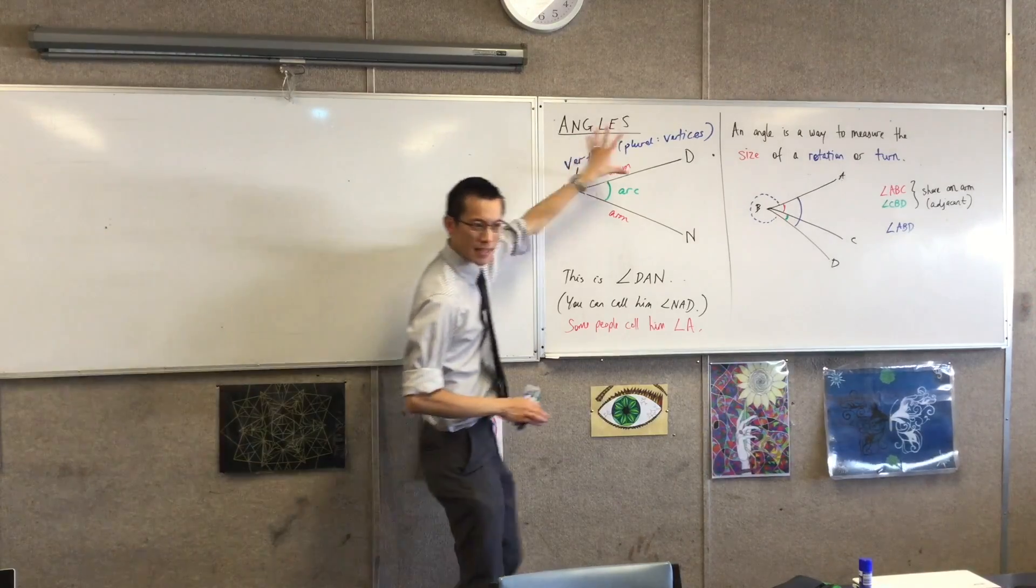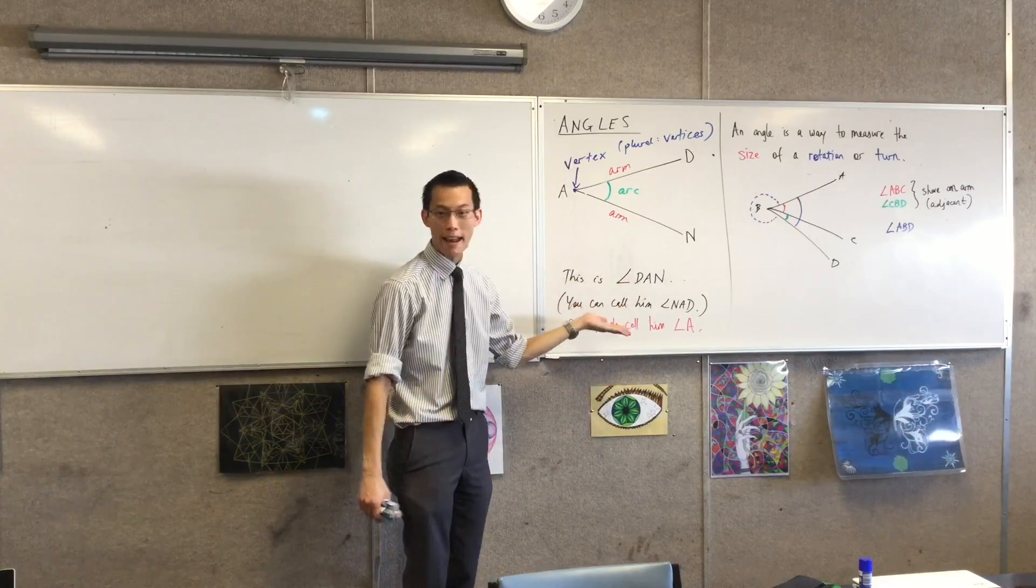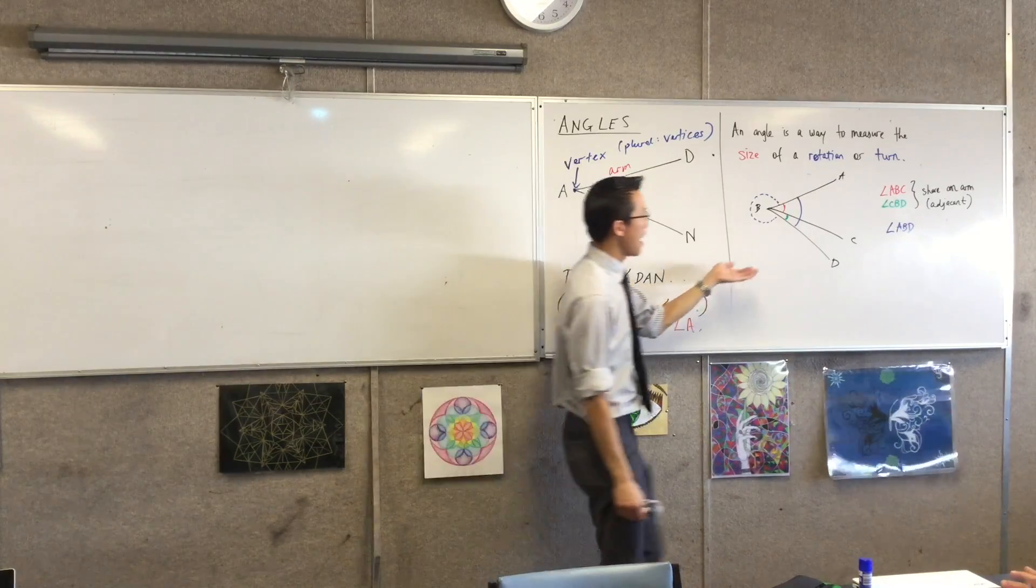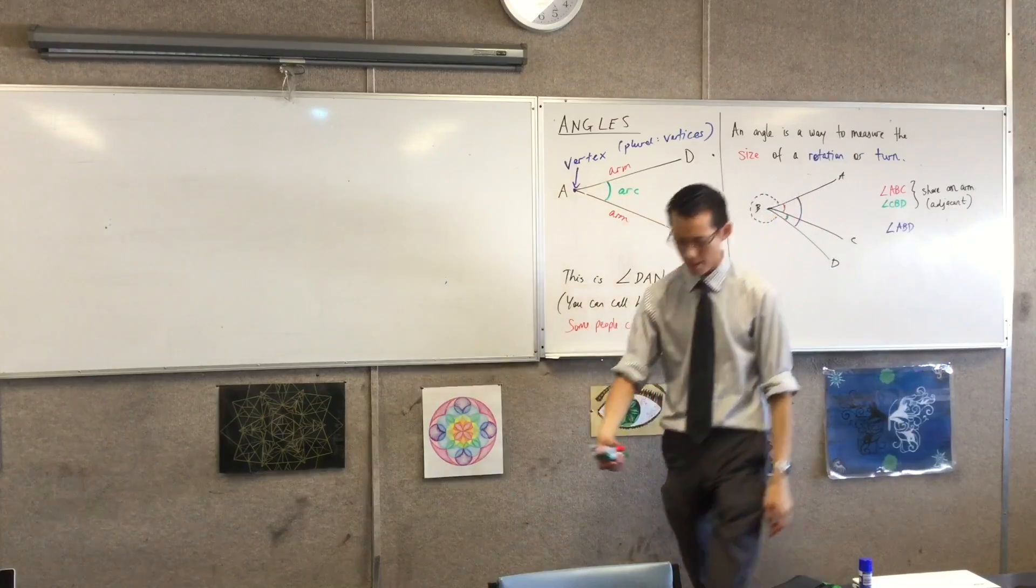So, what have we covered so far? We've got all these pieces that go into an angle. We know how to talk about angles, describe them, name them, and we also know what it means when they're adjacent. One last thing I want to say.